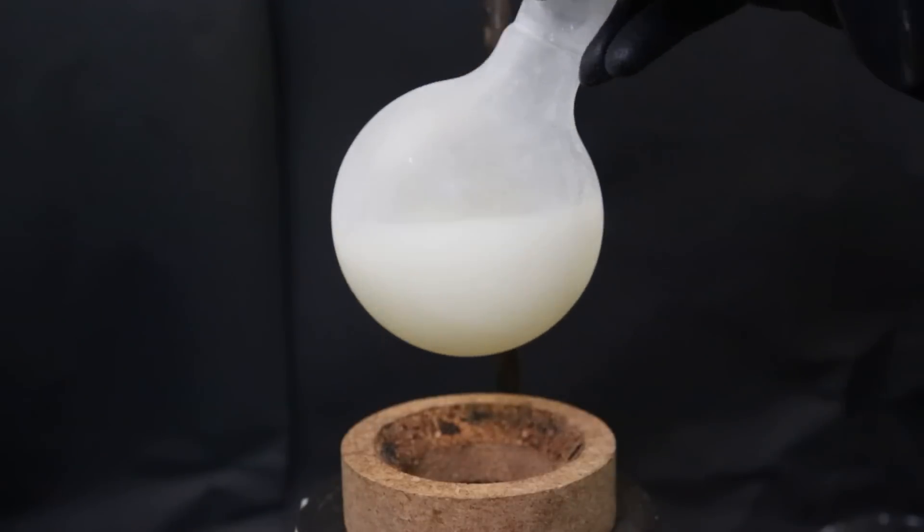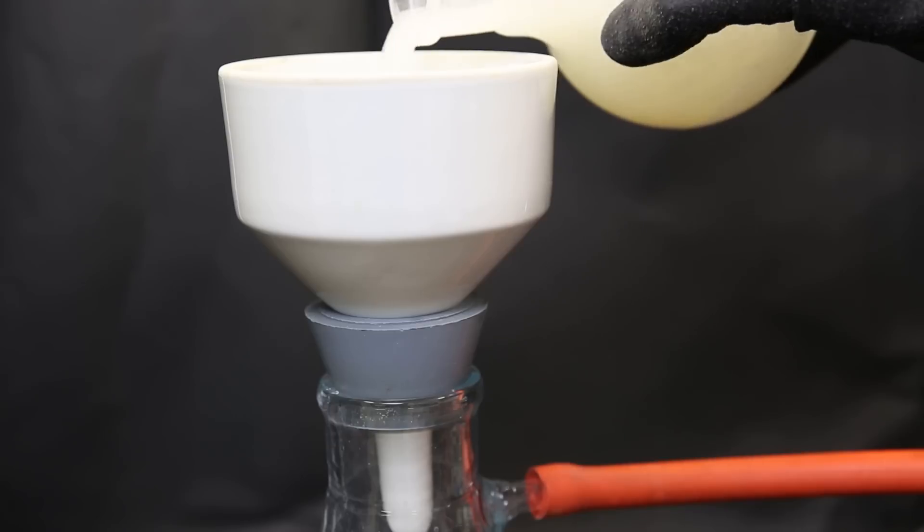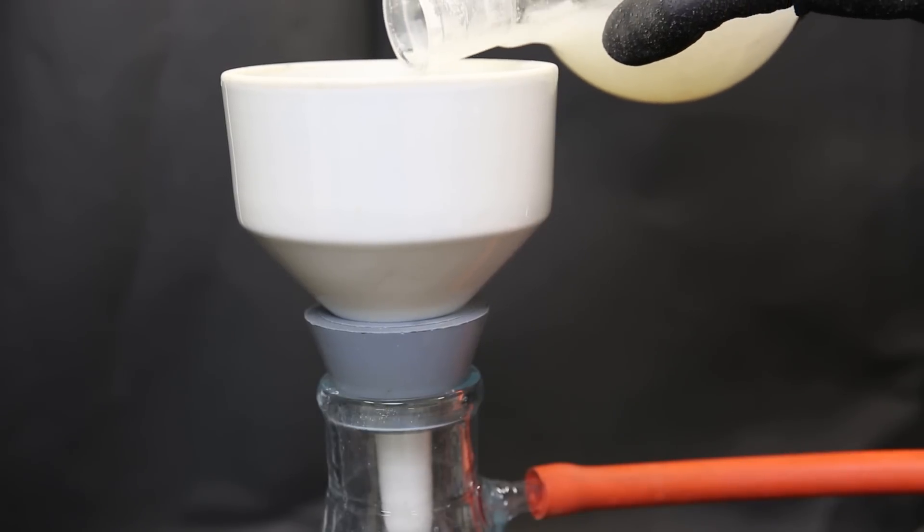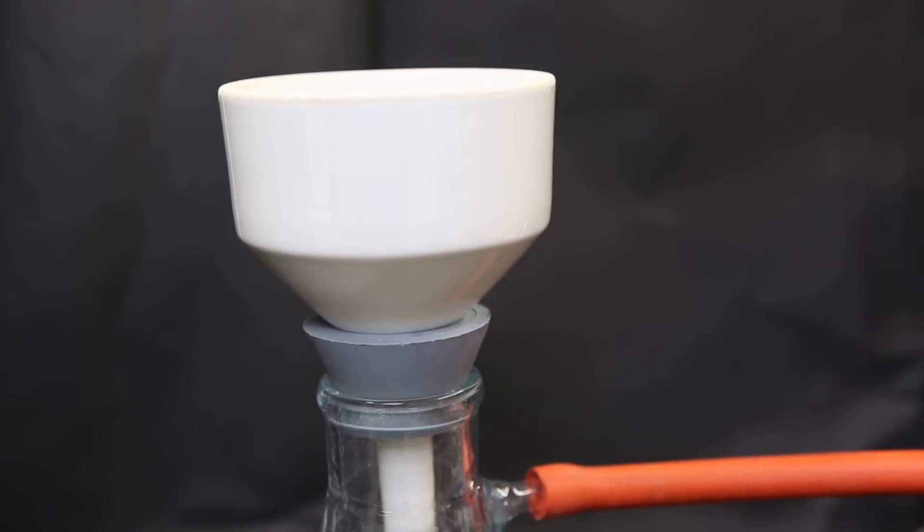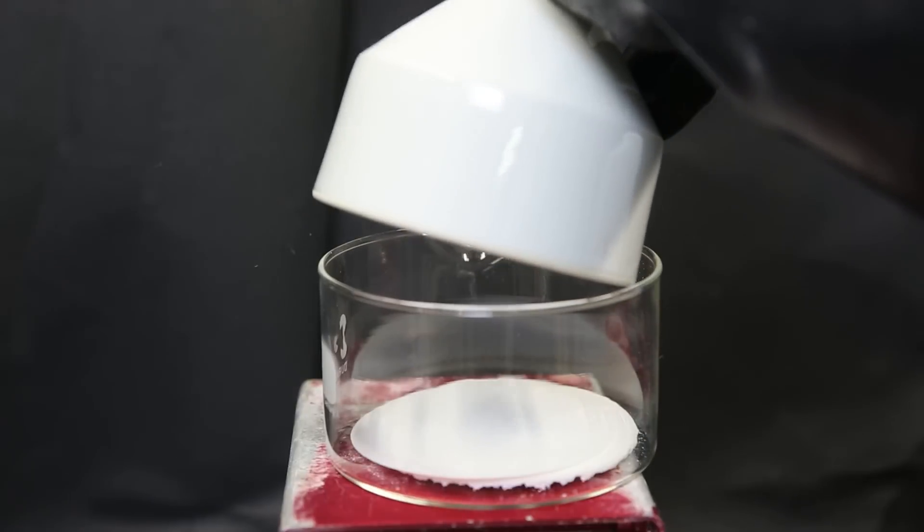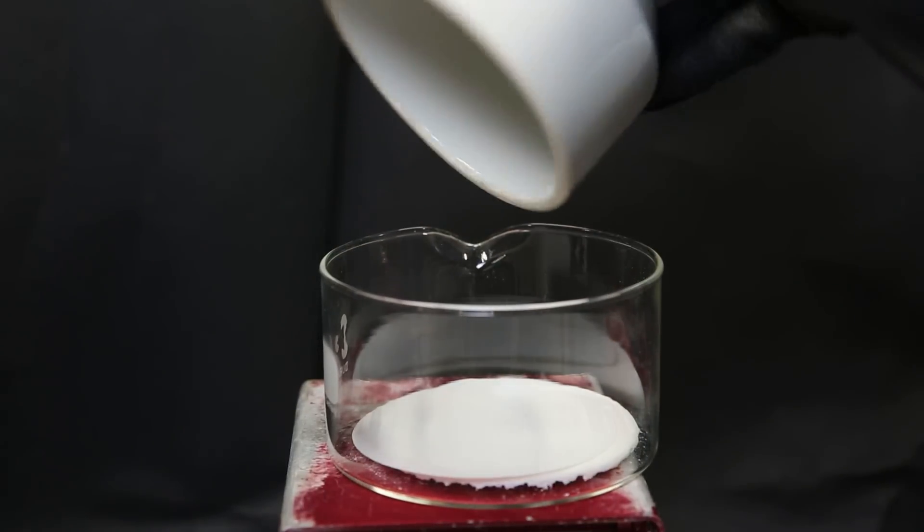So to collect the pure product, I set it up for vacuum filtration. I simply pour it all onto the filter and let it dry for about 15 minutes. Then I put it all into a dish, and we can see it is one big white piece, probably because it's still a little bit wet.